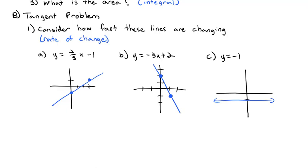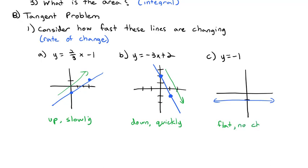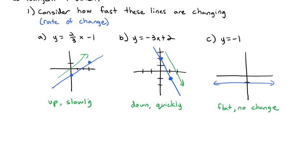The question we're considering is: how fast are these lines changing? The first graph, (2/3)x − 1, is going uphill from left to right, but it's going uphill slowly — gradually working its way uphill. That's different from the second graph, because not only is it going downhill, but it's also going down much quicker. And that's different from the third graph, which really isn't going up or down — it's flat-lined. So graph A is slow uphill, B is going downhill quickly, and C is flat with no change. These lines are easy to analyze because they're straight — they're always changing at the same rate.